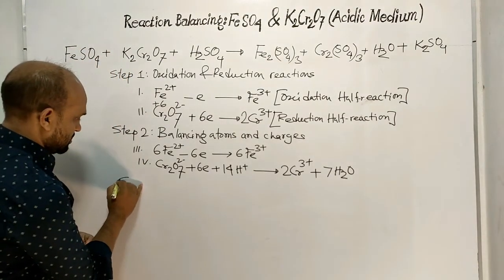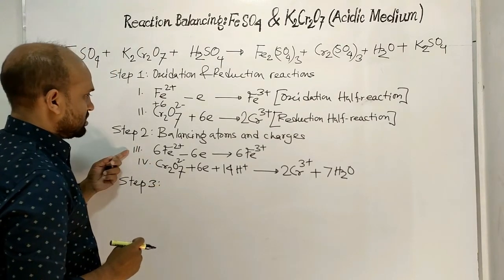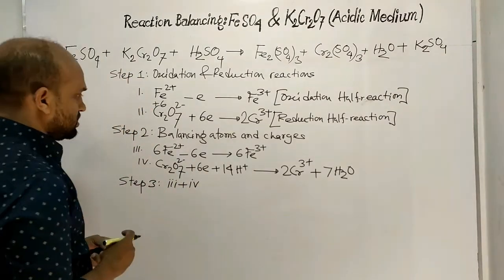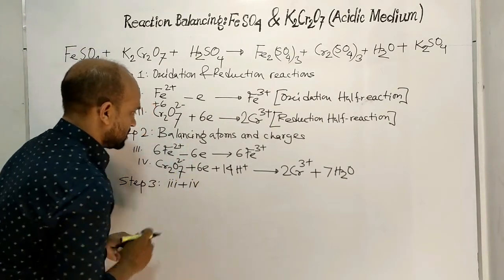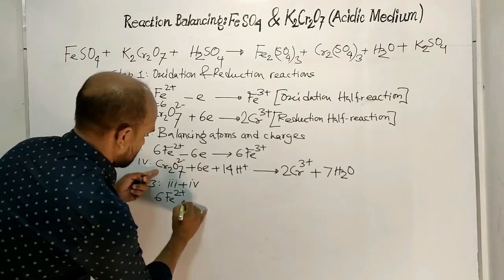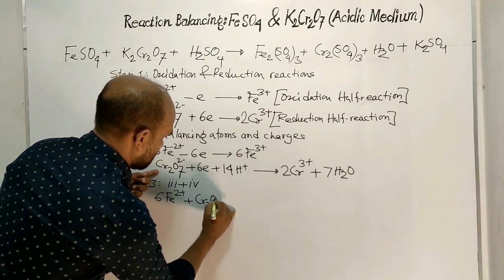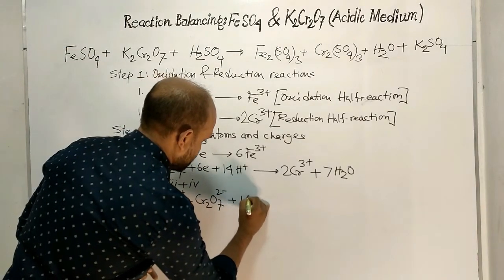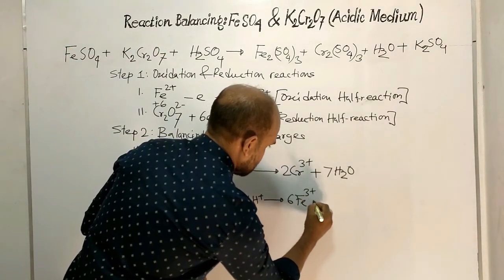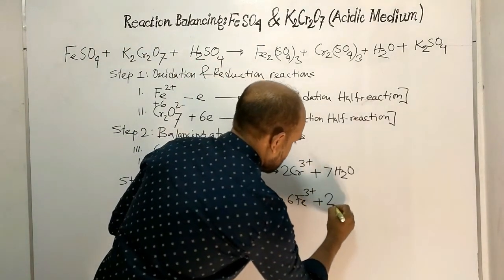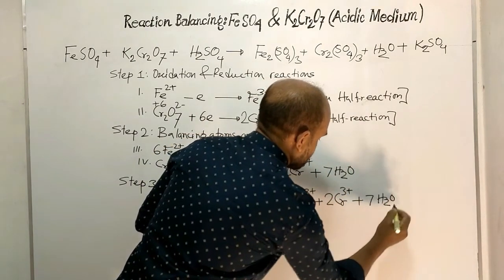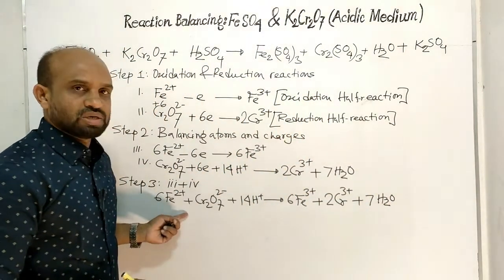Step 3 is addition of equation 3 and equation 4. The 6 electrons on both sides cancel out. The combined equation becomes: 6 Fe²⁺ + Cr₂O₇²⁻ + 14H⁺ → 6 Fe³⁺ + 2 Cr³⁺ + 7H₂O.